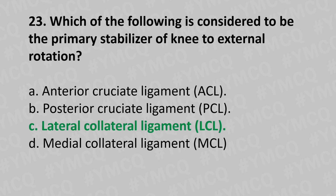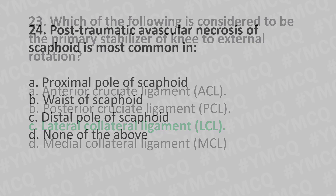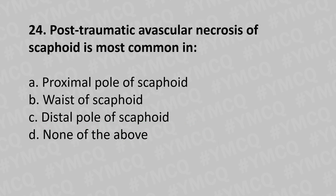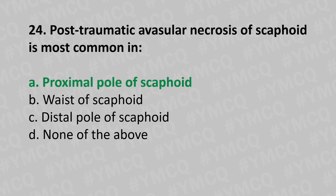Moving to our 24th question: post-traumatic avascular necrosis of the scaphoid is most common in — option A proximal pole of the scaphoid, option B waist of the scaphoid, option C distal pole of the scaphoid, option D none of the above. And the answer is option A proximal pole of the scaphoid.